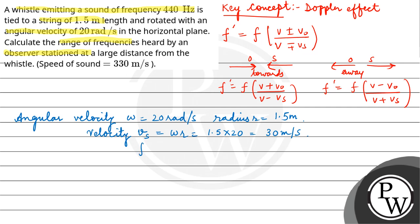Frequency is given as 440 Hz and speed of sound is 330 meter per second. So using the formula, f' will be equal to f' at the time when the whistle is approaching the observer.